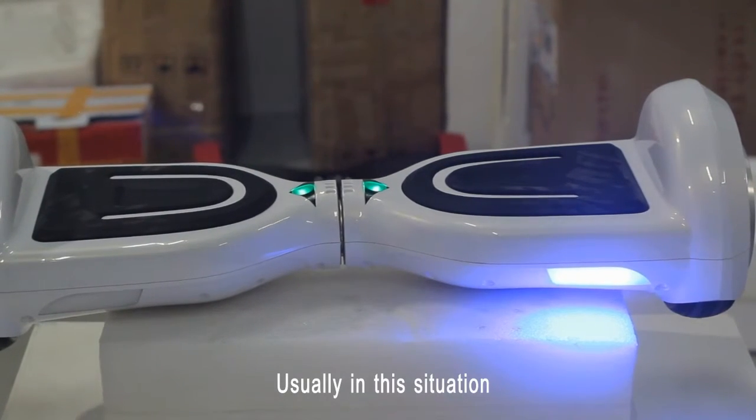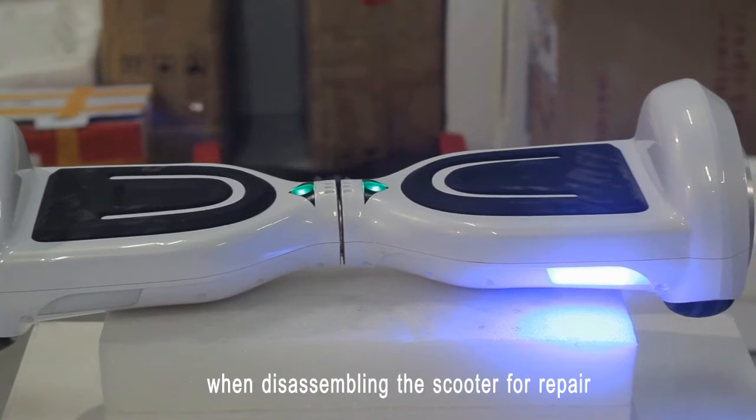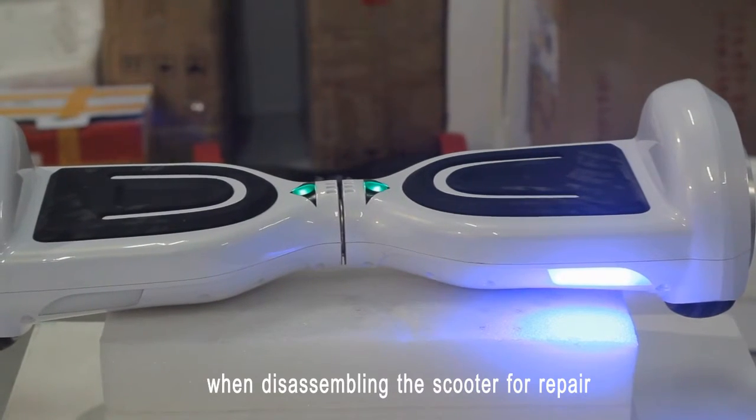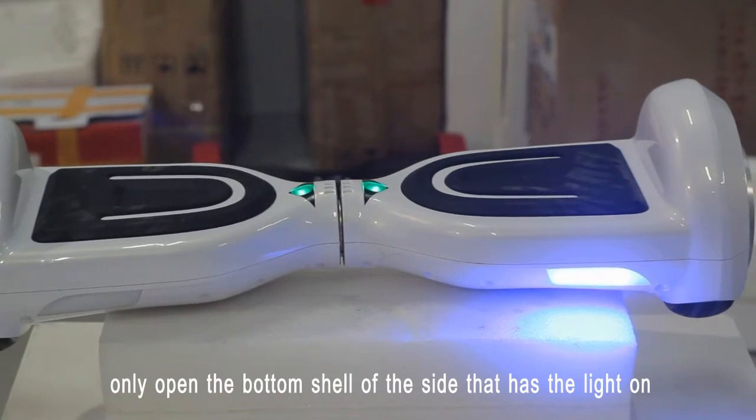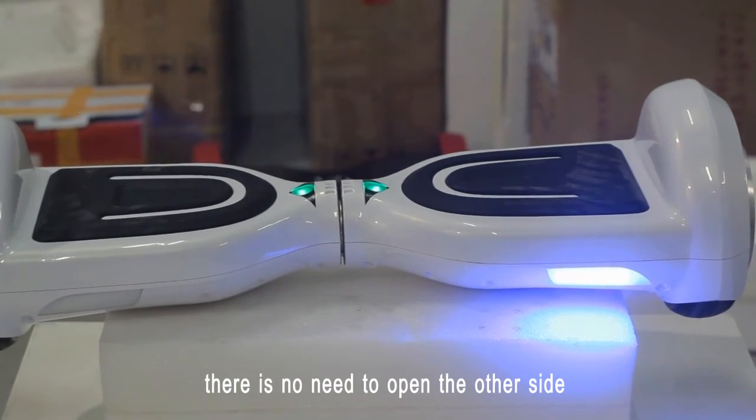Usually in this situation, there is a problem with the subboard. When disassembling the scooter for repair, only open the bottom shell of the side that has the light on. There is no need to open the other side.